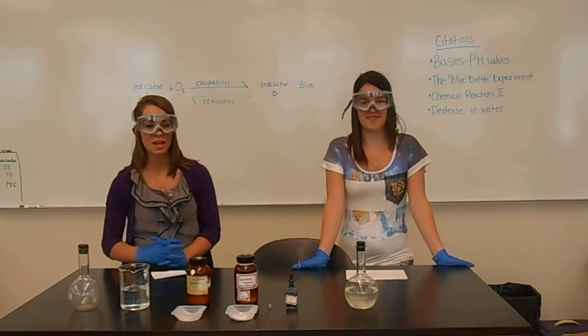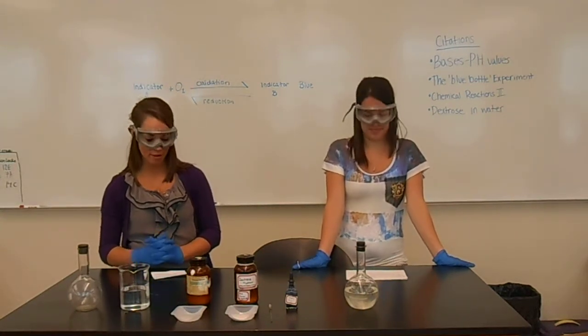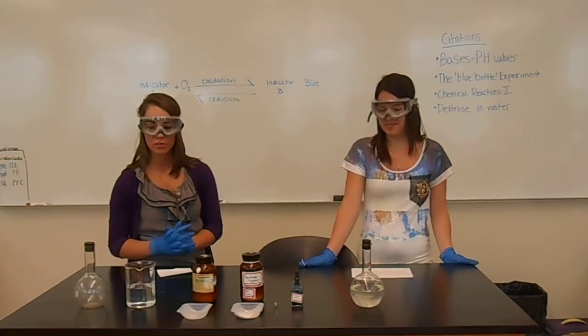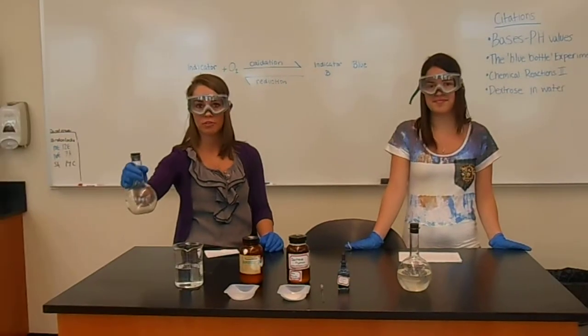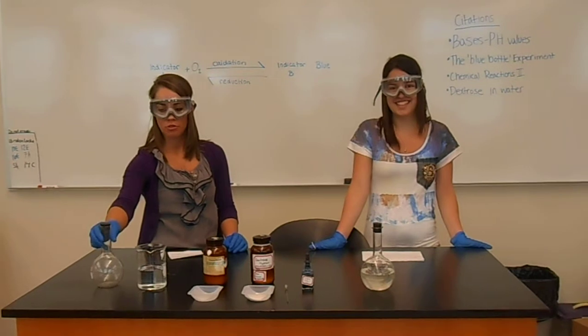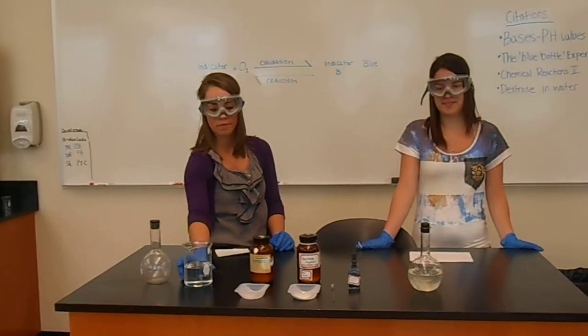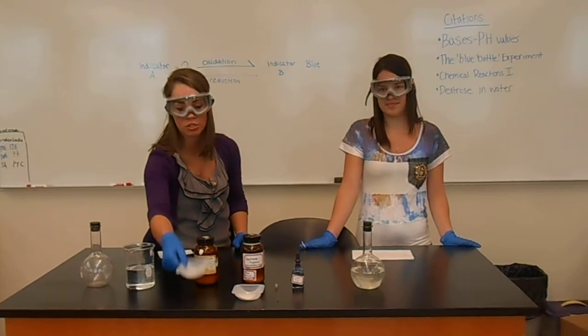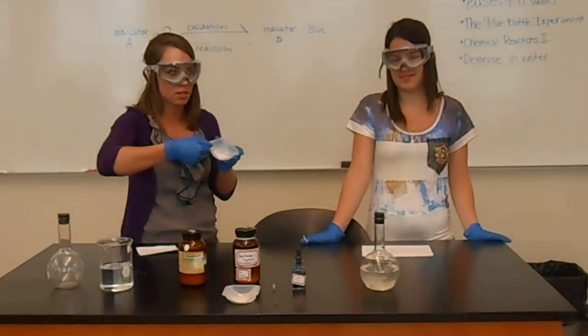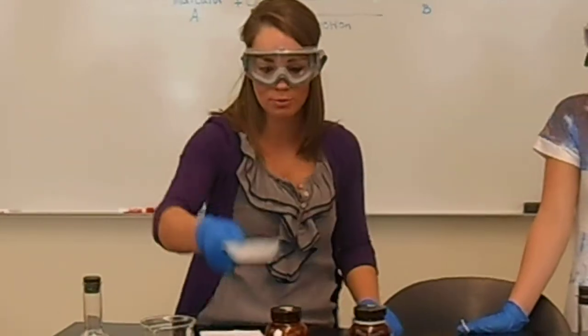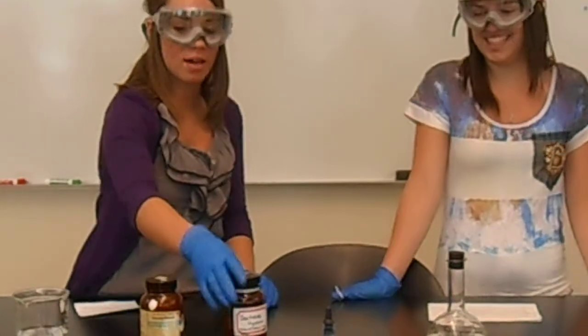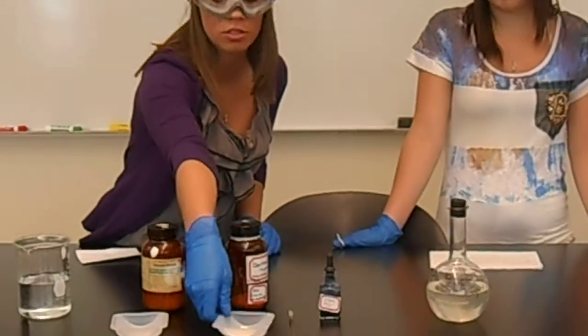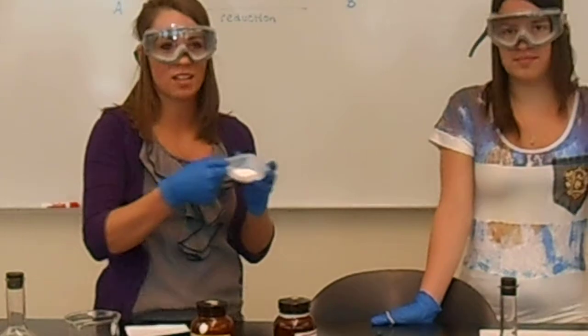I'm Tori and I'm Alexis, and we're doing the methylene blue traffic light. Materials you will need: a flask with a stopper on top, 300 milliliters of distilled water, 8 grams of potassium hydroxide which looks like these little pieces, and then you have 10 grams of dextrose which is white and sand-like.